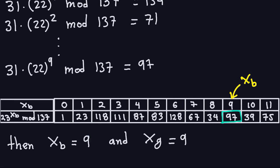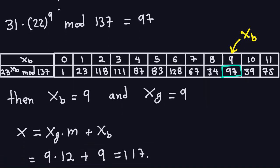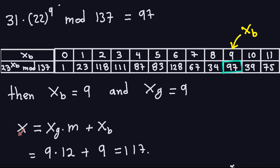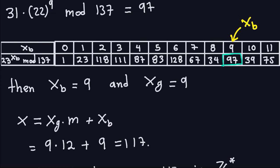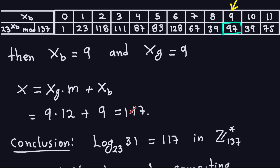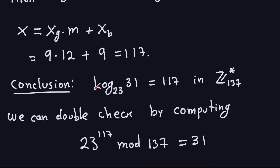Now applying the formula: x = xg × m + xb = 9 × 12 + 9 = 117. That is the discrete log in base 23 of 31 in Z*137. The conclusion is that log_23(31) = 117 in Z*137. Context matters here — the group we're working in is important.